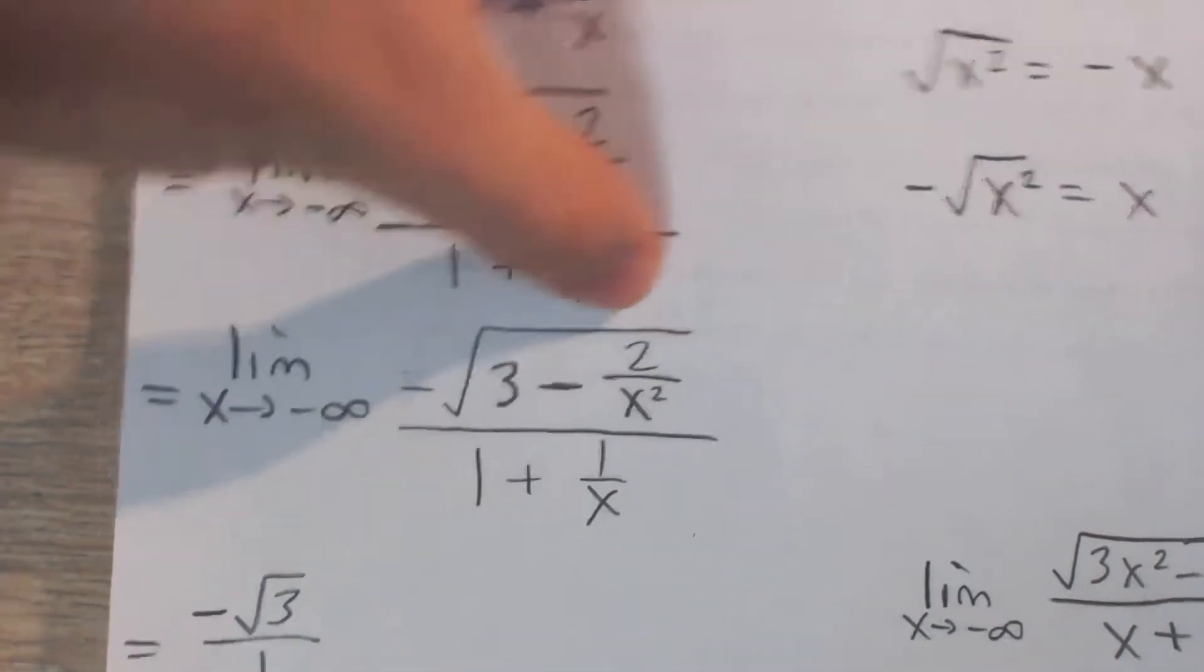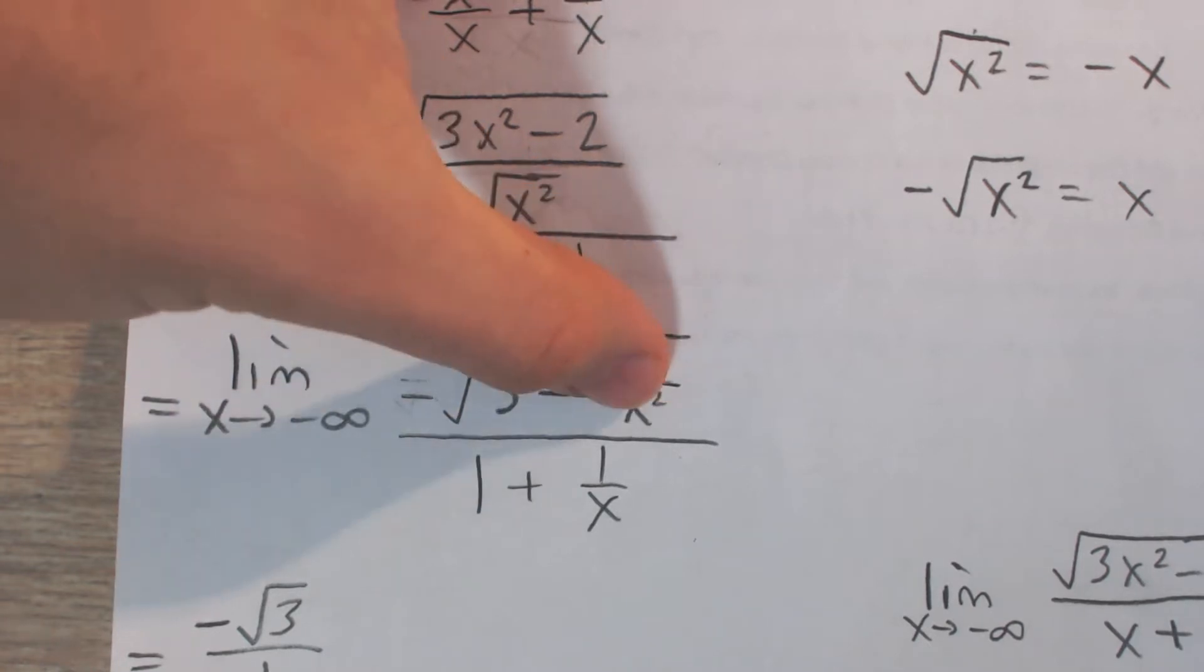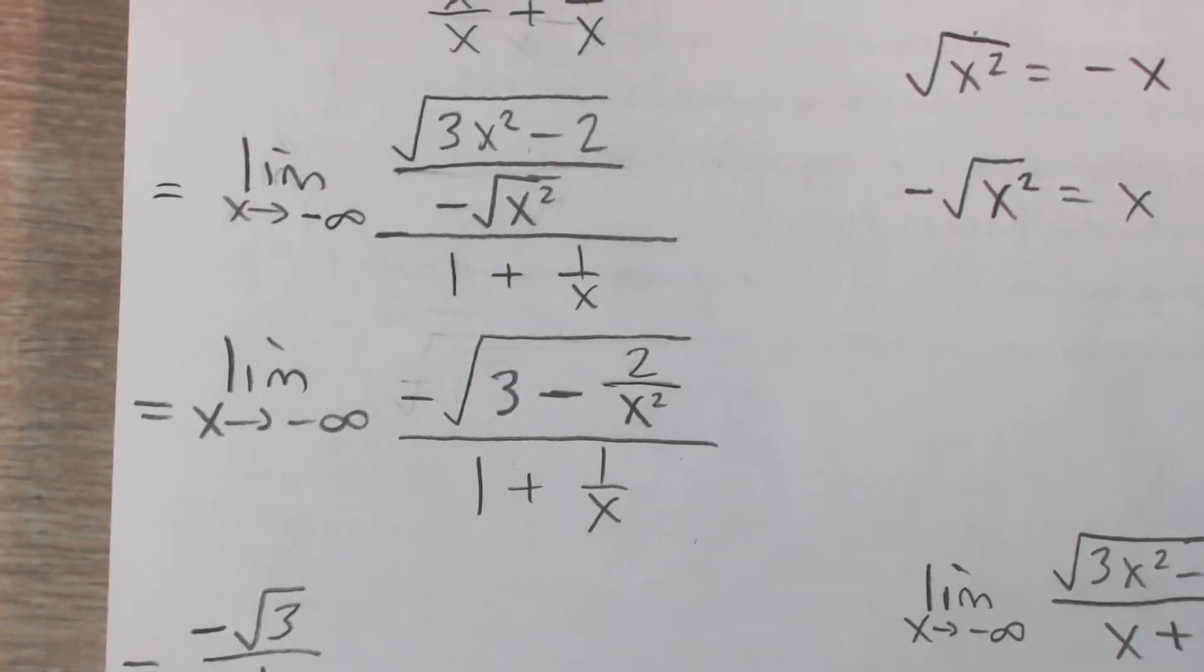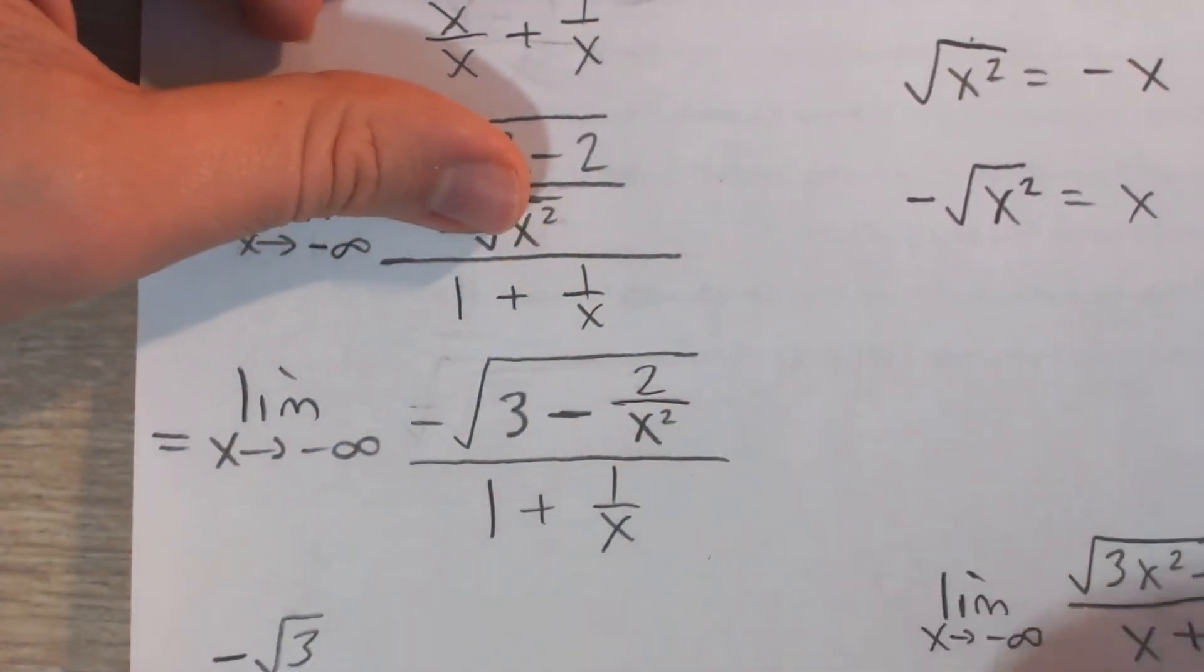And the numerator 3 is not affected by x. But this term, right, as x gets very large negative, the denominator is going to get really large, right? x squared. Say negative 1,000. Negative 1,000 squared is a million, right? It's a very large number. So this is going to approach 0.